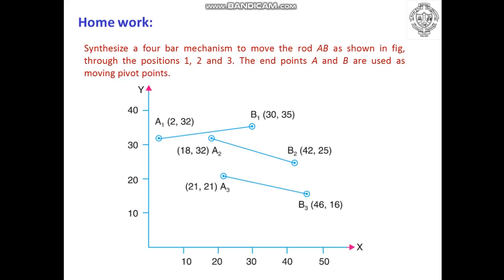Two numerical problems are given as homework. The first: synthesize a 4-bar mechanism to move rod AB through three different positions as shown in the figure. The first position of the coupler is A1B1, second is A2B2, and third is A3B3. Points A and B are the moving pivot points. You will need graph paper and graphical instruments to solve this problem; you can take a suitable scale.